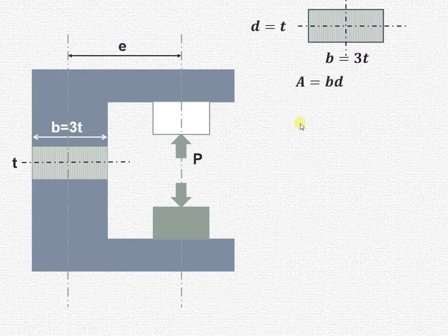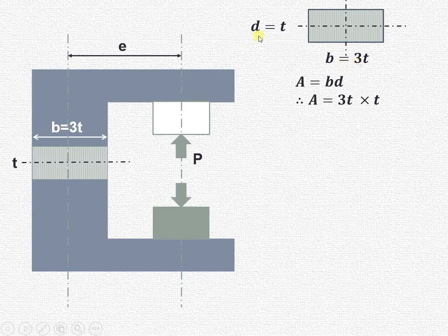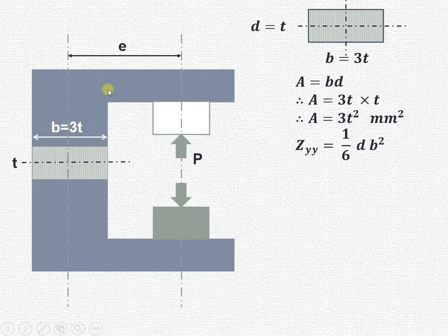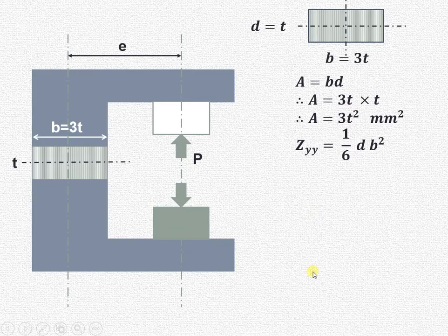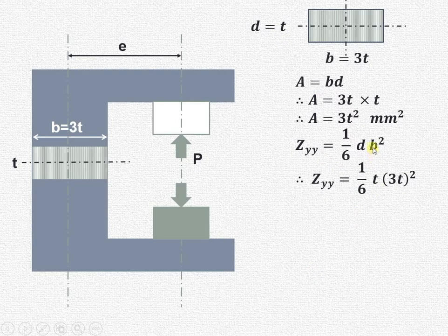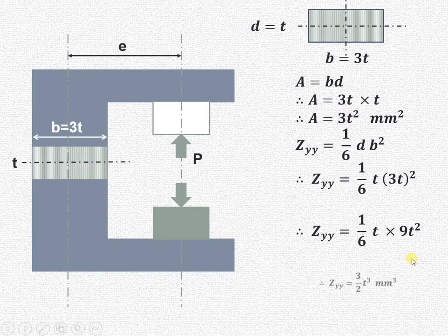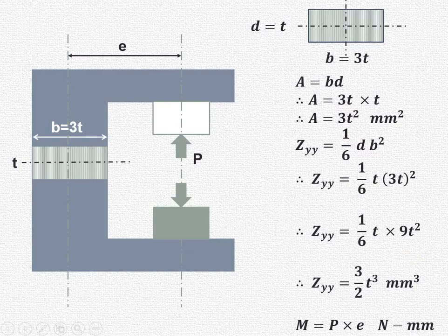First we find the area of cross section. Since this is a rectangular cross section, area equals b into d, where b is 3t and d is t, so area equals 3t squared. Since the eccentricity is measured from the y-axis, we use the section modulus formula for a rectangular section about the yy axis: Z equals (1/6) × d × b². Substituting d equals t and b equals 3t gives Z equals (1/6) × t × 9t² which simplifies to (3/2)t³. The moment is force times perpendicular distance, so M equals p into e.